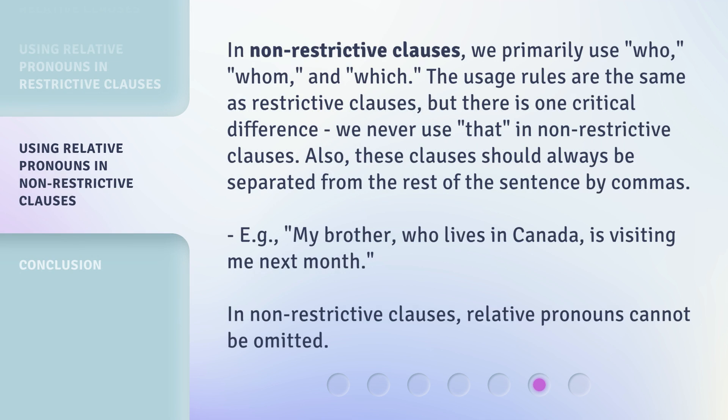In non-restrictive clauses, we primarily use who, whom, and which. The usage rules are the same as restrictive clauses, but there is one critical difference: we never use 'that' in non-restrictive clauses. Also, these clauses should always be separated from the rest of the sentence by commas. For example: 'my brother, who lives in Canada, is visiting me next month.' In non-restrictive clauses, relative pronouns cannot be omitted.